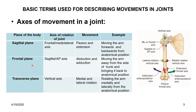Coming to the frontal plane, the axis of rotation of the joint in this plane is the sagittal or anteroposterior axis. The movements that take place in this axis are abduction and adduction. Abduction is moving the arm away from the side of the trunk, and adduction is bringing it back to anatomical position.